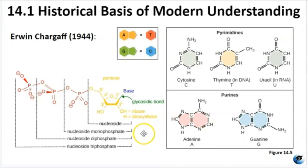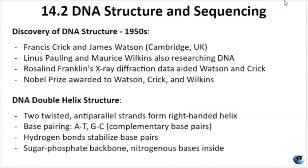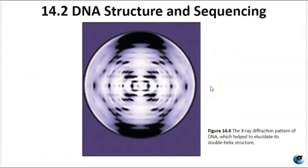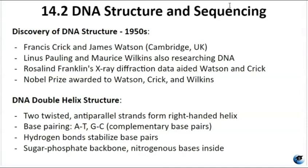In the 1950s, Francis Crick and James Watson collaborated to determine the structure of DNA. They were inspired by the work of scientists like Linus Pauling and Maurice Wilkins, who were also investigating the DNA structure. They utilized an x-ray diffraction pattern discovered by Rosalind Franklin, who had been working in the x-ray diffraction lab and had lots of data and was actually able to photograph the double helix. Watson and Crick combined their expertise in x-ray diffraction analysis and proposed that DNA is indeed a double helix consisting of two intertwined strands.